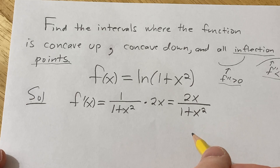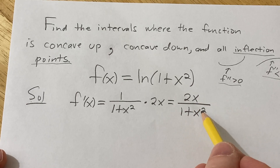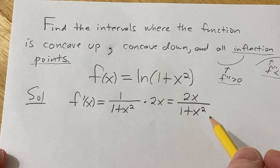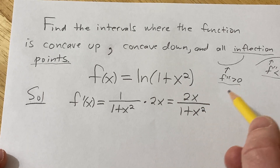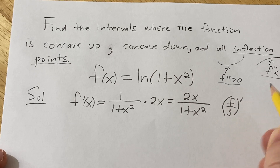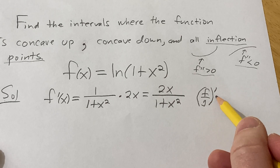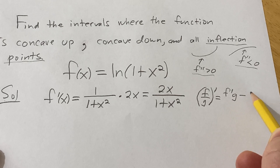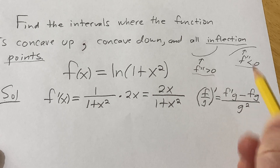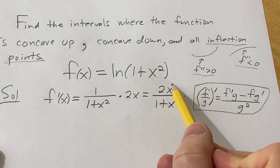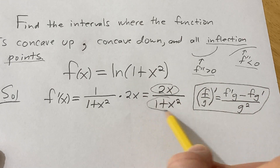Now we have to take the derivative again. It looks like we have an x here and an x squared here, and it doesn't look like it's very easy to simplify. So we're going to use something called the quotient rule. The quotient rule formula — think of f as your top function and g as your bottom function. It's the derivative of the top times the bottom, minus the top times the derivative of the bottom, over the bottom squared. This is the quotient rule formula, which we're going to apply here to this function.